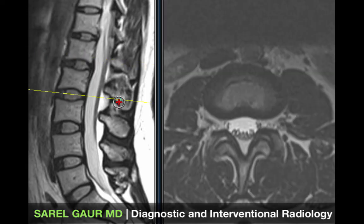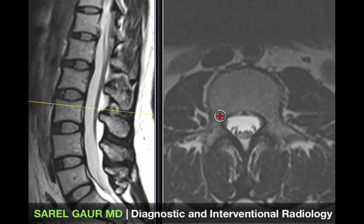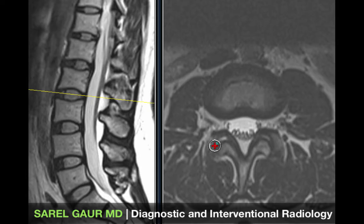Back at the intervertebral disc level, looking at the posterior elements: you can see the pedicle, the facet joint on either side, and how the bone connects posteriorly through the lamina to form the spinous process.